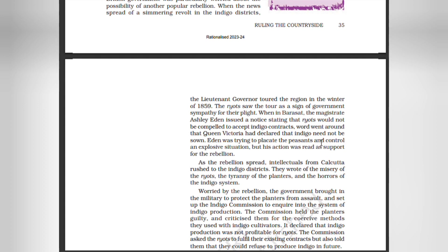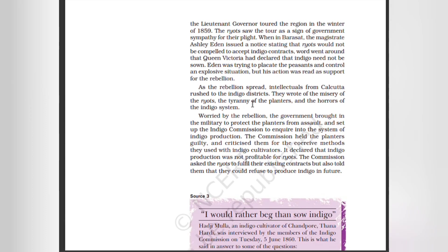Eden was trying to placate the peasants and control an explosive situation, but his actions were read as support for the rebellion. As the rebellion spread, intellectuals from Calcutta rushed to the indigo districts. They wrote about the misery of the ryots, the tyranny of the planters, and the horrors of the indigo system. Worried by the rebellion, the government brought in the military to protect the planters from assault and set up the Indigo Commission to inquire into the system of indigo production.